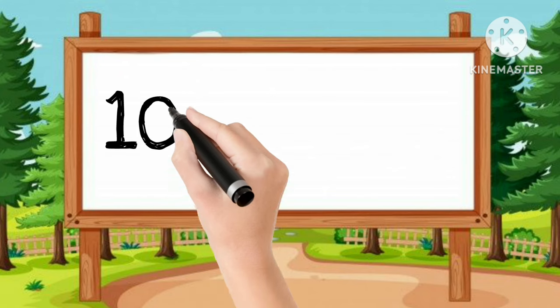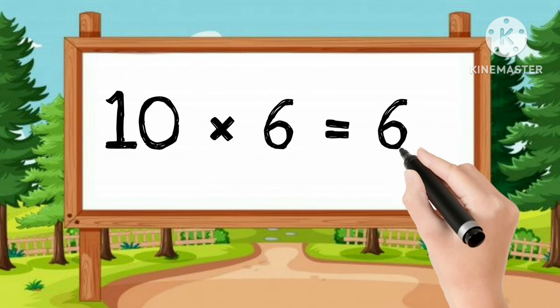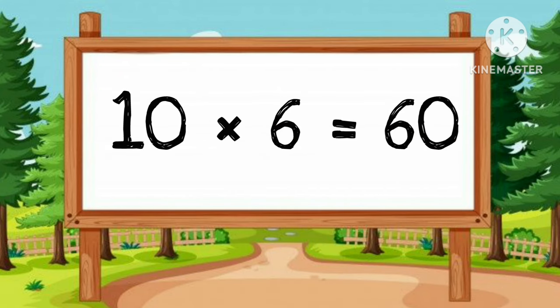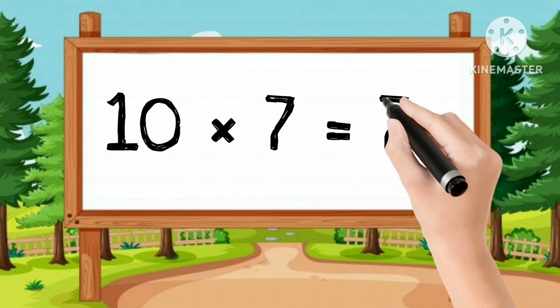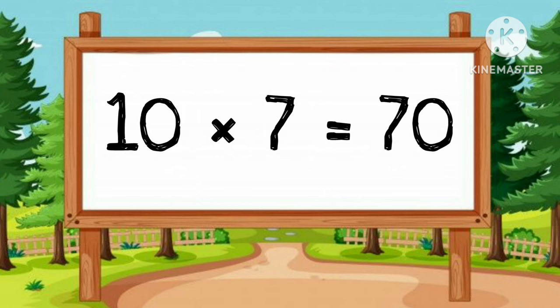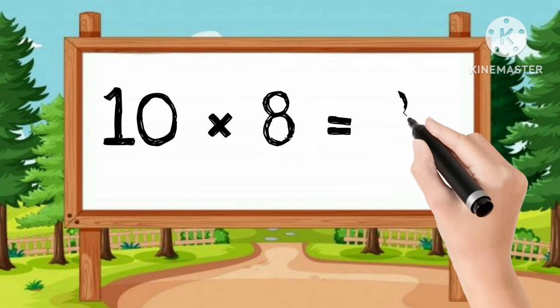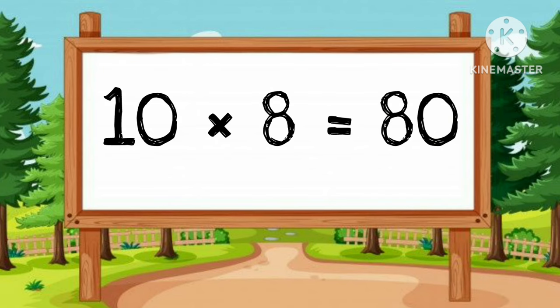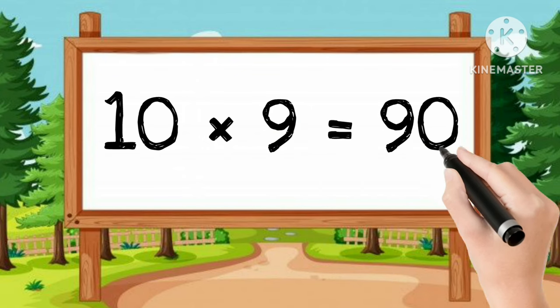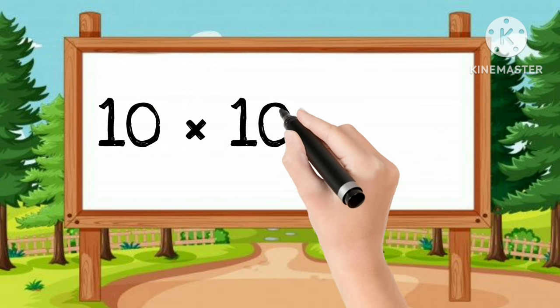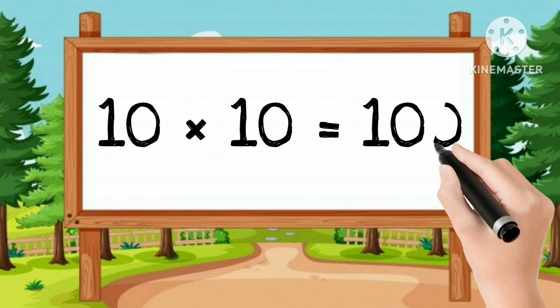10-6s are 60. 10-7s are 70. 10-8s are 80. 10-9s are 90. 10-10s are 100.